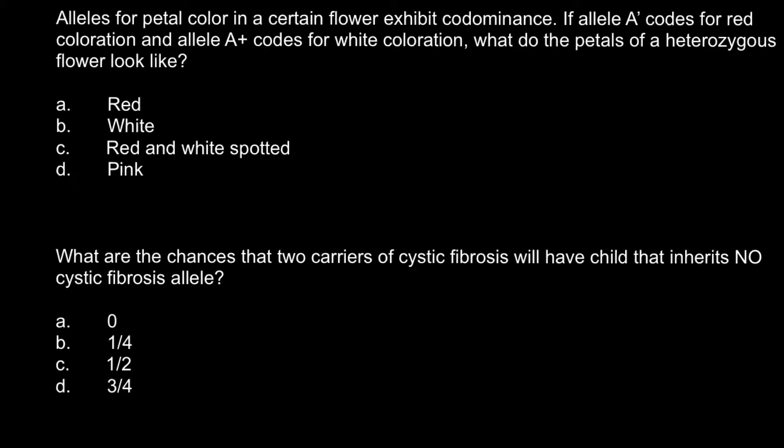The first question is: alleles for petal color in a certain flower exhibit co-dominance. If allele A codes for red coloration and allele A+ codes for white coloration, what do the petals of the heterozygous flower look like? Here are four answers to choose from.